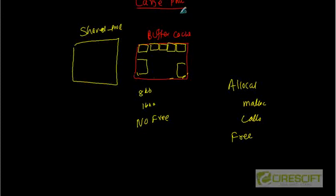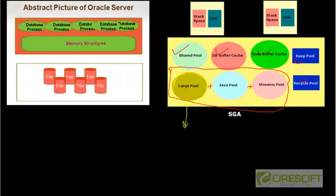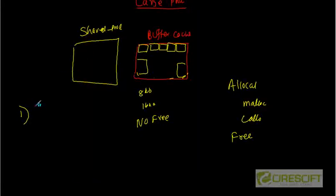The Large Pool is used for different things. For example, in a Shared Server mode the UGA resides in the SGA rather than the PGA. The PGA in shared server mode consists only of the stack space, and the UGA actually lies in the SGA. That UGA, in a shared server configuration, is going to come from the Large Pool — the Large Pool allocates memory for the UGA requirement in case of a Shared Server mode.